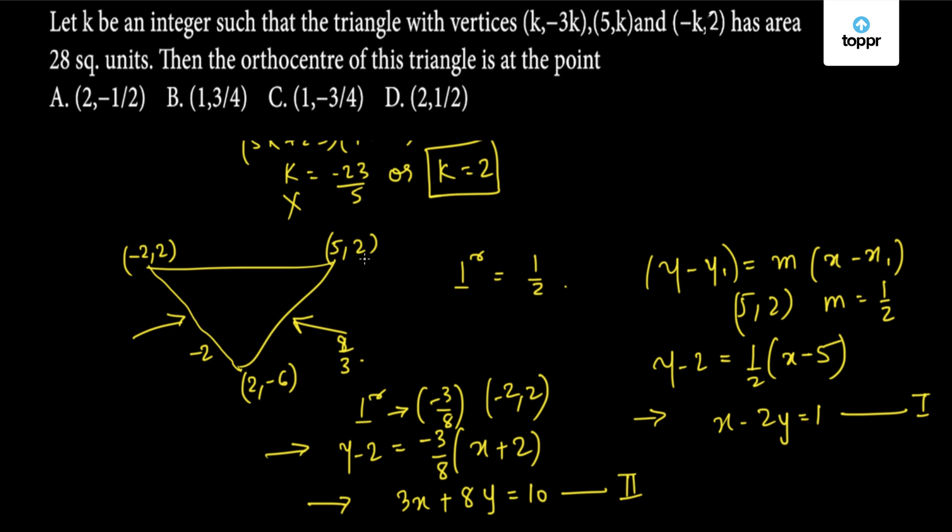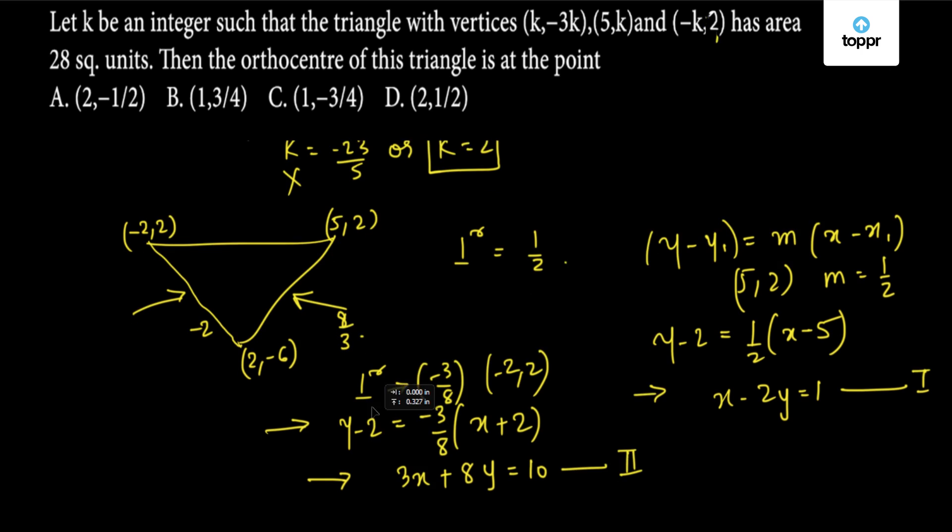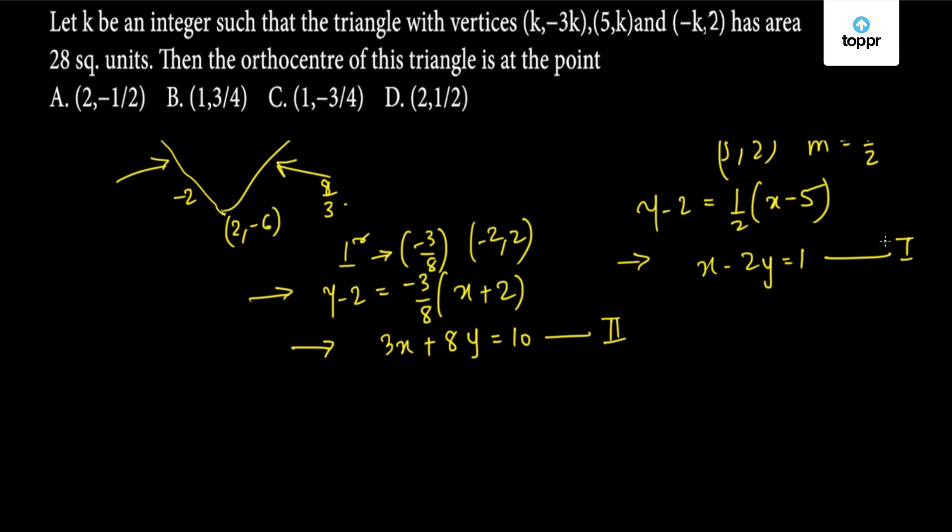Now we know the equation of two altitudes for two sides of this triangle. The orthocenter for this triangle will be the point of intersection of these two altitudes. Solving equations 1 and 2 simultaneously, we get x = 2 and y = 1/2. This point is the orthocenter, so option D is correct.